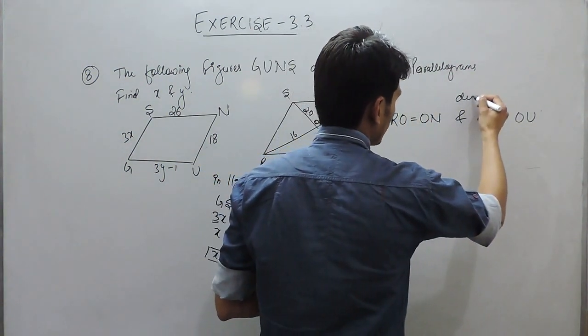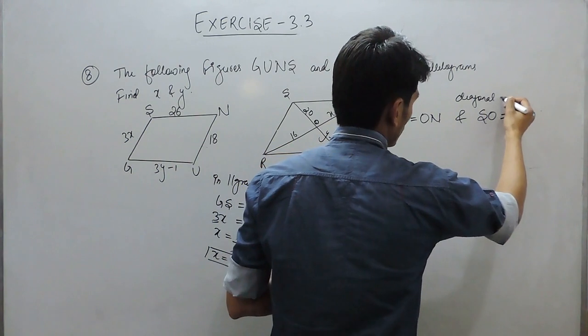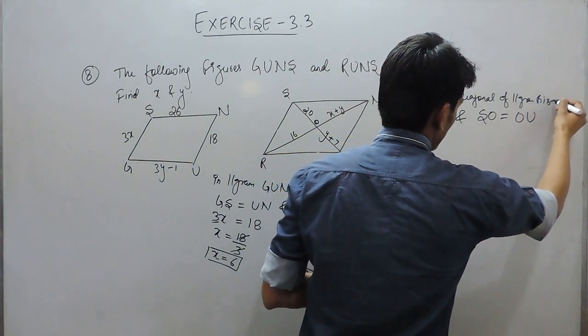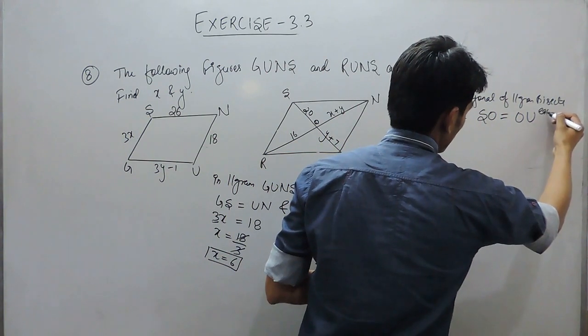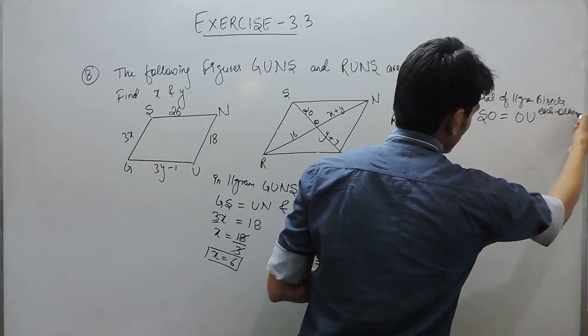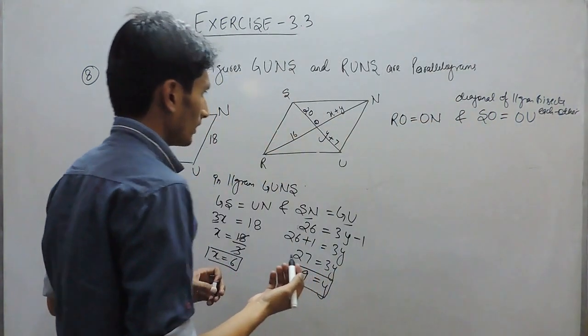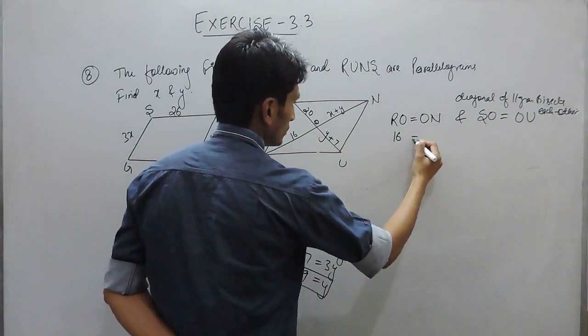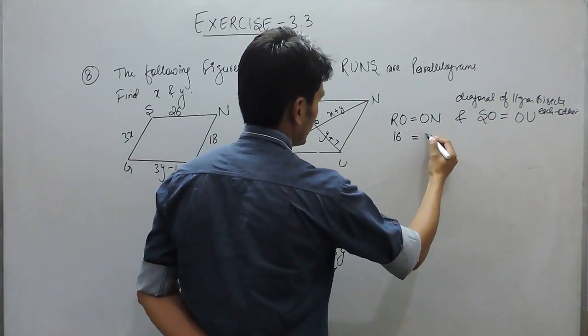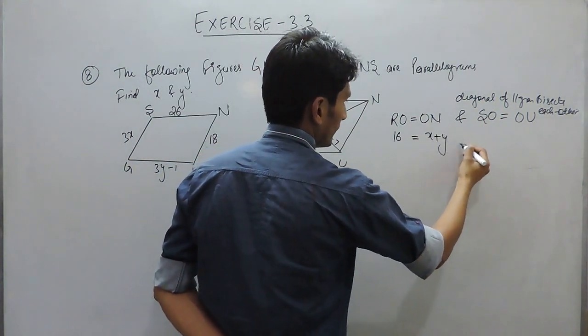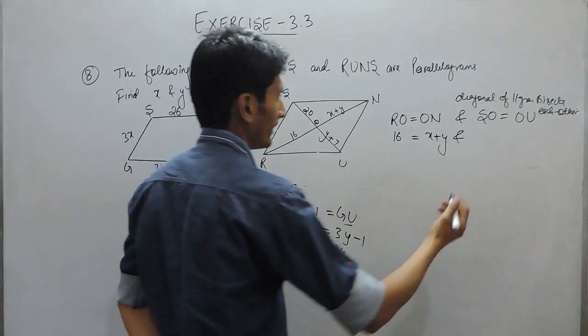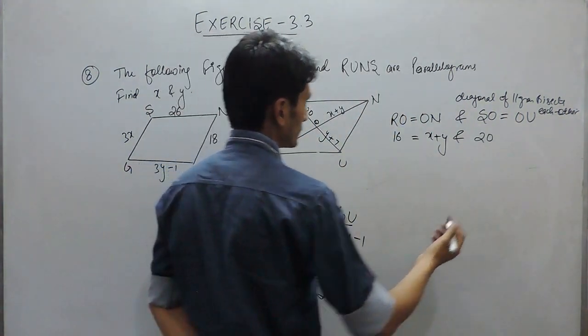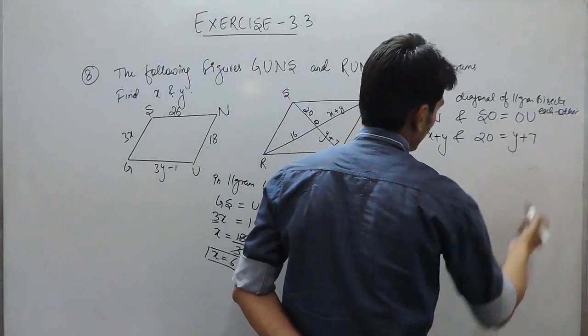So, the value of RO should be equal to ON and SO must be equal to OU. Because, diagonals of a parallelogram bisect each other. So, we know that the value of RO is equal to 16 and the value of ON is x plus y. In second case, the value of SO is 20 and the value of OU is y plus 7.